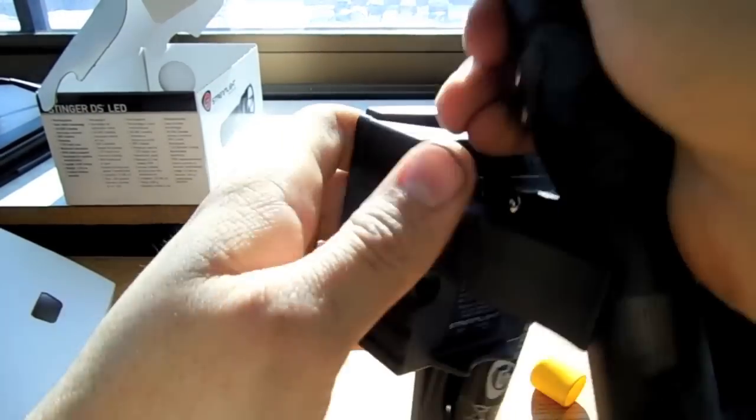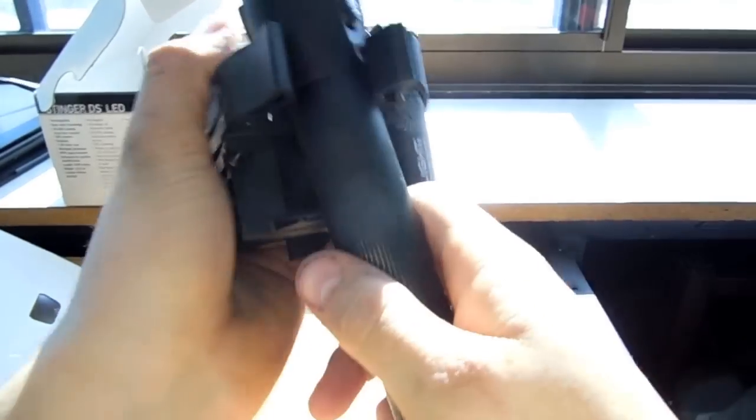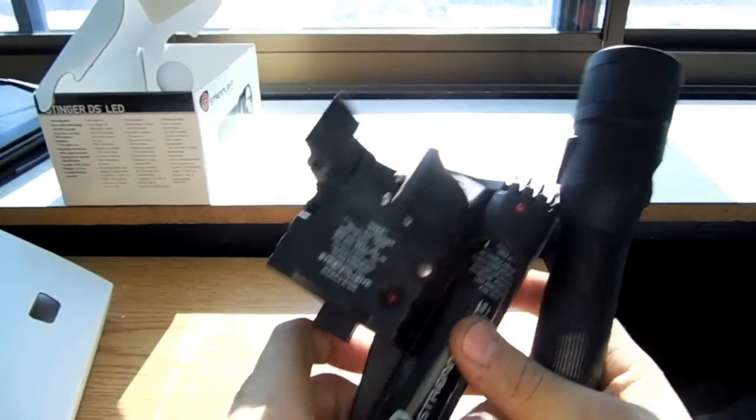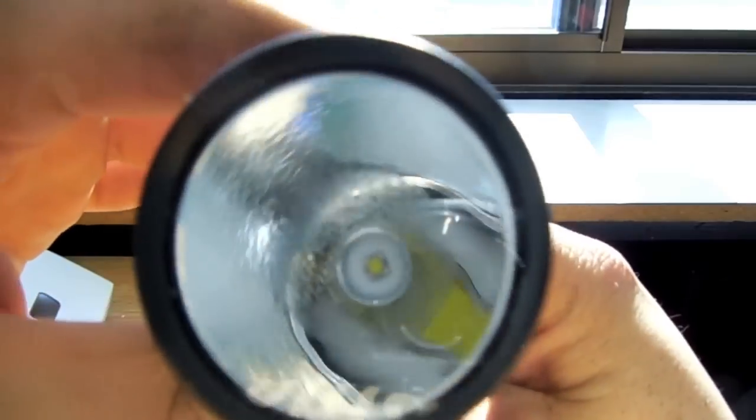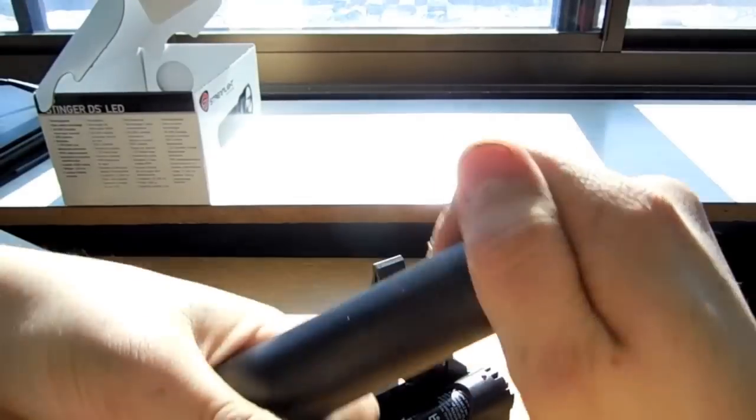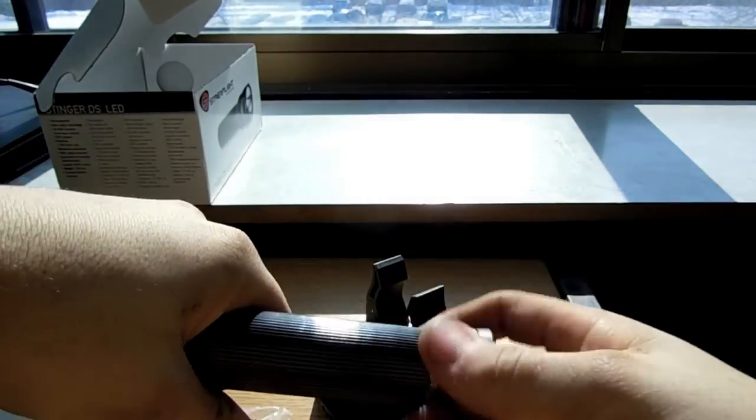You can even just push it in like so, twist it, and you're good to go. Now you can kind of get a good image of the C4 LED right in there. It does have one battery already pre-installed.